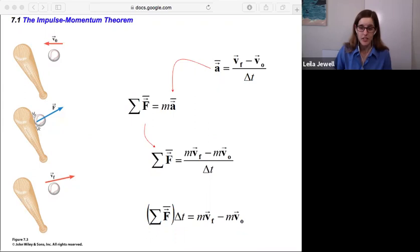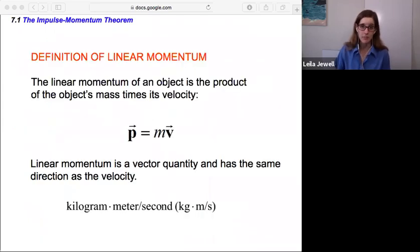So this is going to be called linear momentum. We're going to also see angular momentum later on. So the linear version is just traveling in straight line paths, not in a circle or spinning. So the linear momentum of an object is the product of the object's mass times its velocity. This is a really handy equation to note.